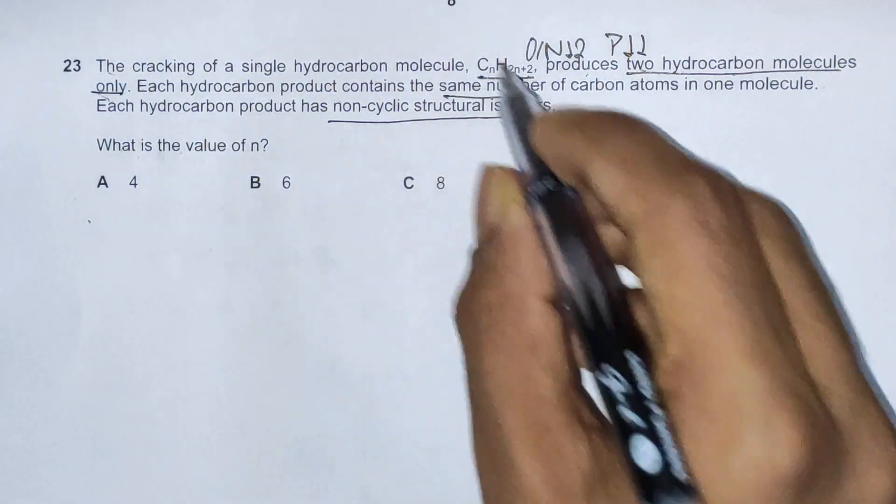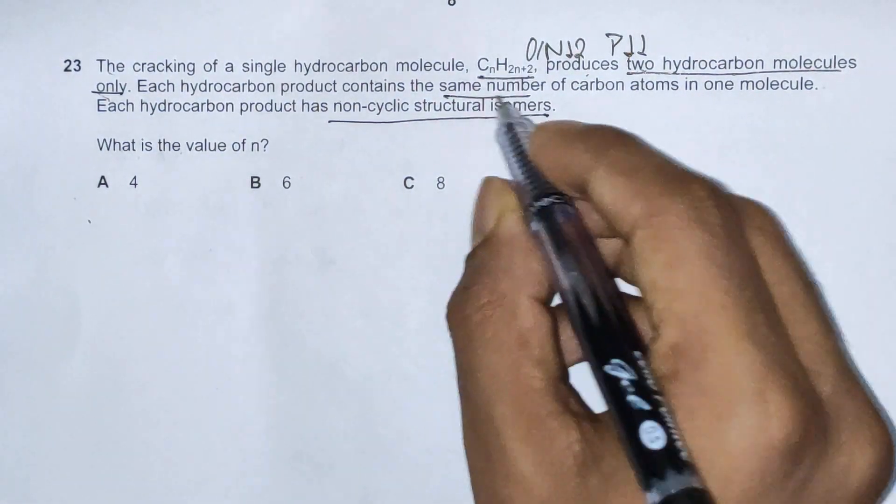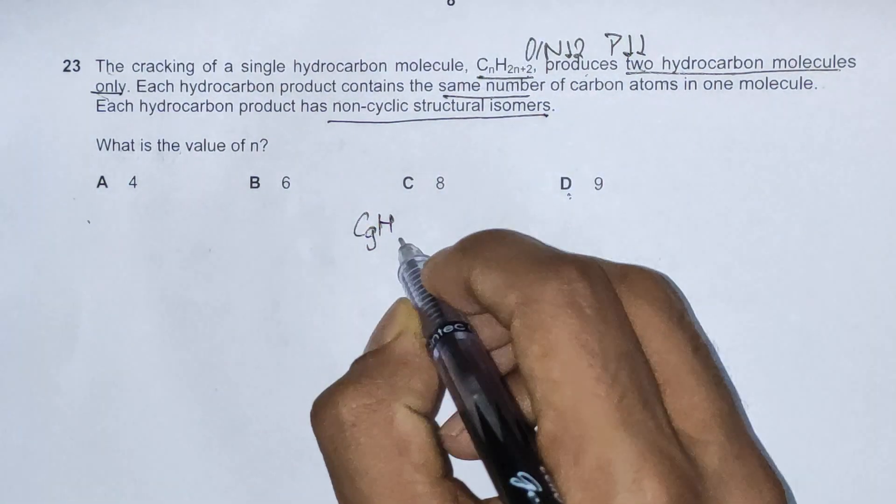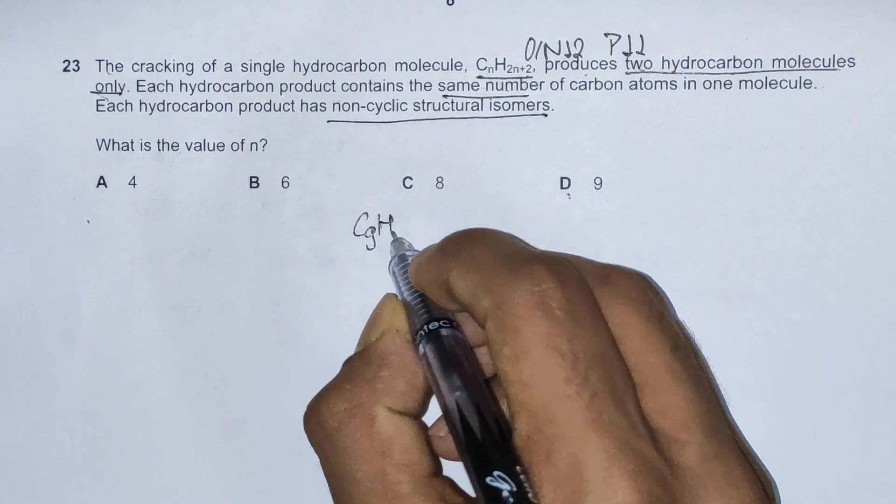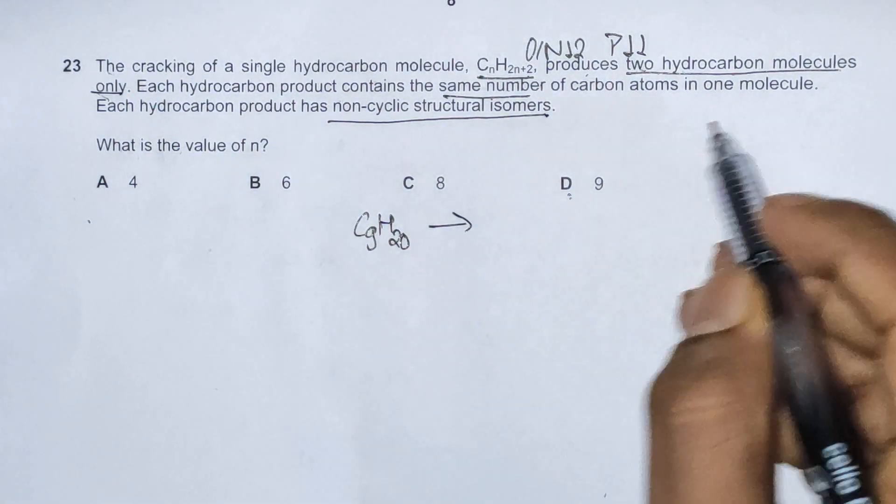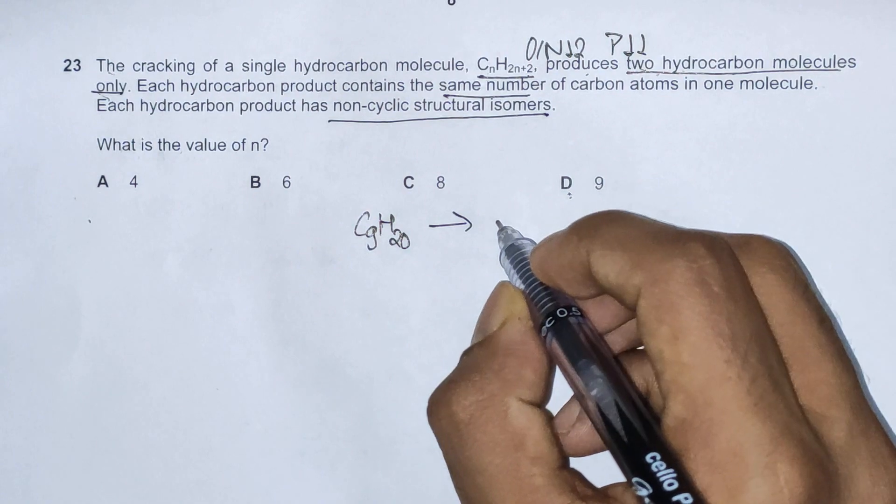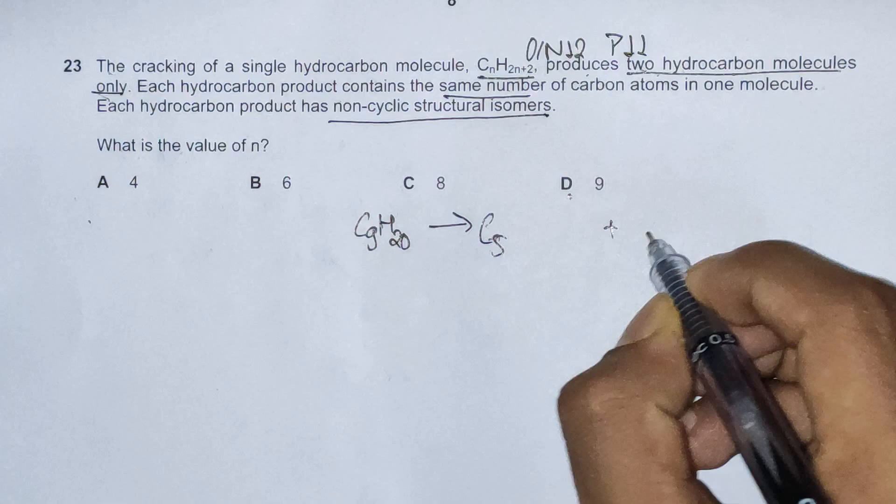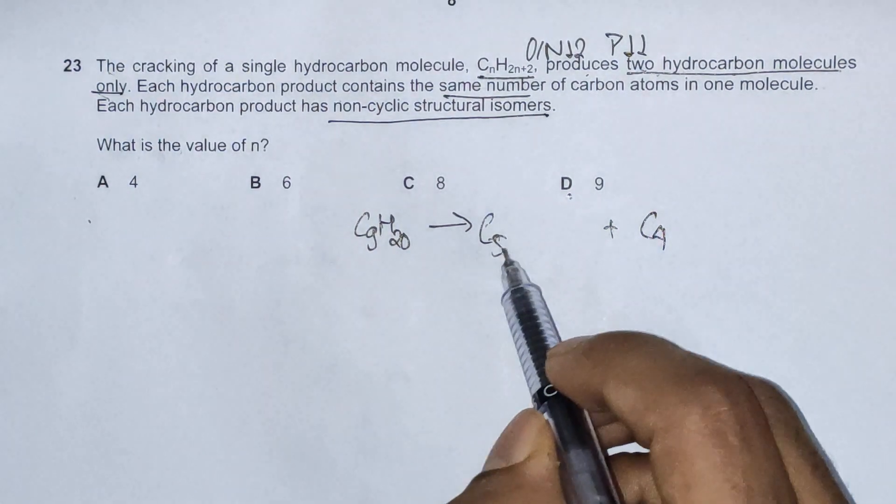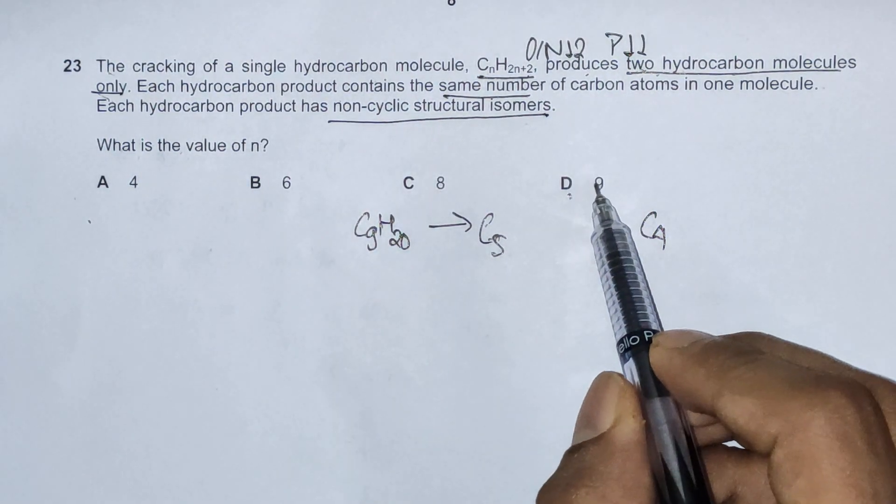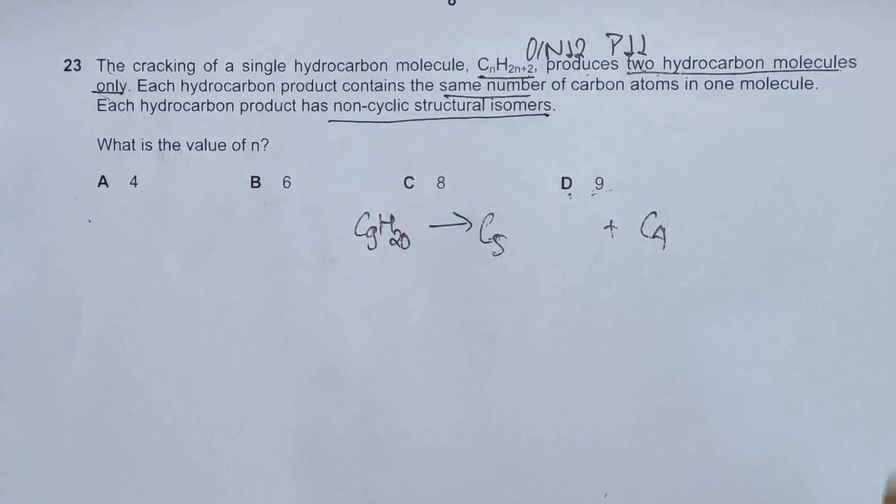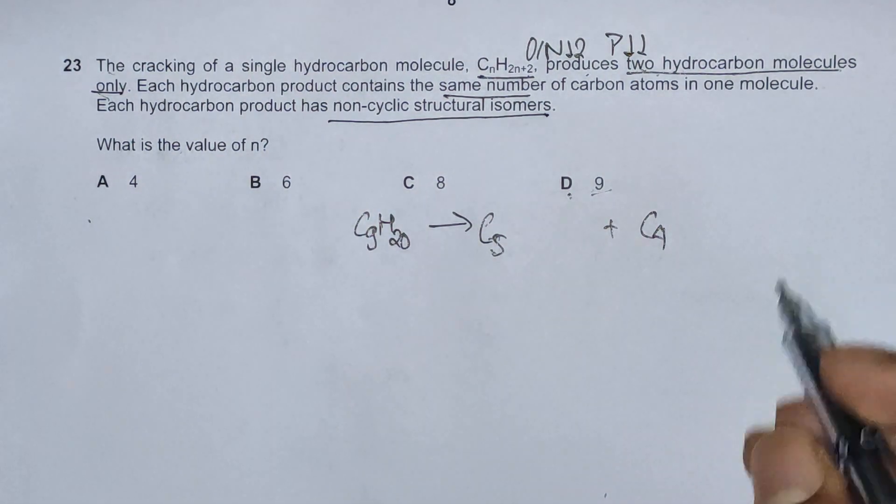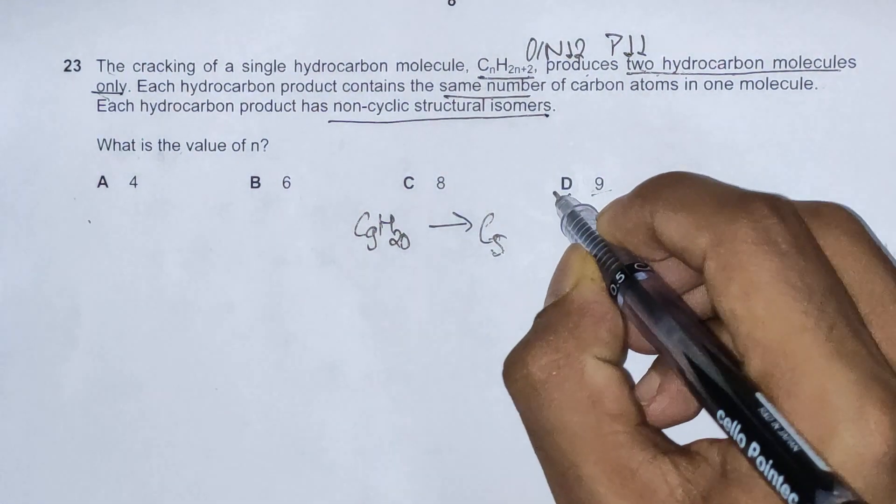When we plug in option D here, CNH2N+2 would be C9H20, and we need to produce only 2 hydrocarbon molecules. Best case scenario, we'll have 1 hydrocarbon with 5 carbon atoms and another with 4 carbon atoms. When there is an odd number of carbon atoms, the number of carbon atoms in 2 products can never be the same. So we'll reject D.